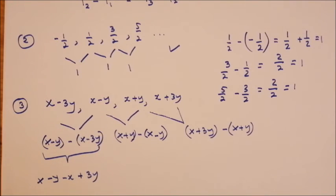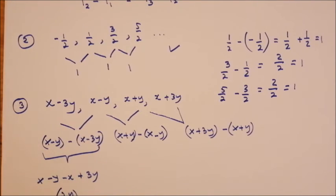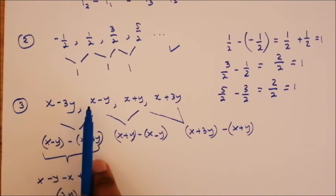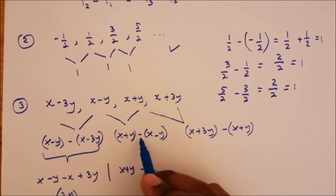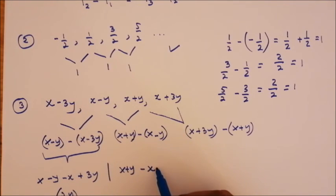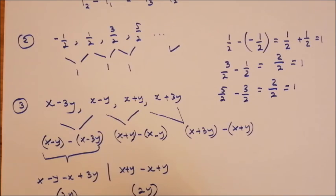Simplifying: x minus y minus x plus 3y — the x's cancel, leaving negative y plus 3y equals 2y. For the next pair: x plus y minus x plus y — the x's cancel, and y plus y equals 2y.